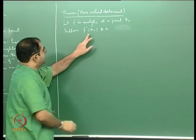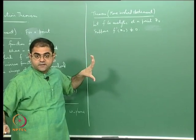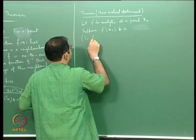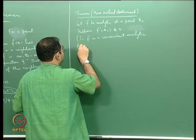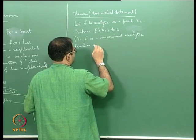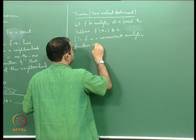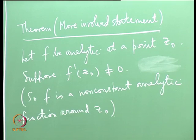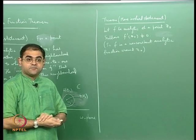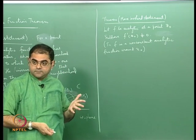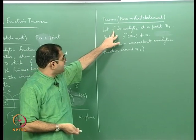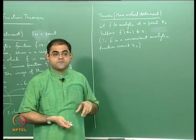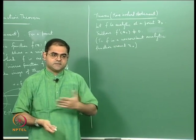This implies f is a non-constant analytic function in a neighbourhood around z₀ — in a disc surrounding z₀. For a non-constant analytic function, zeros are isolated. If we put w₀ = f(z₀), then z₀ is a zero of f(z) − w₀. This is a trick we have been using throughout the previous lectures.